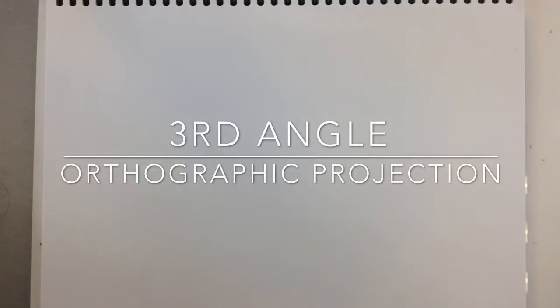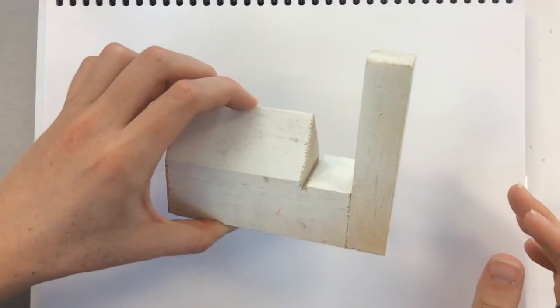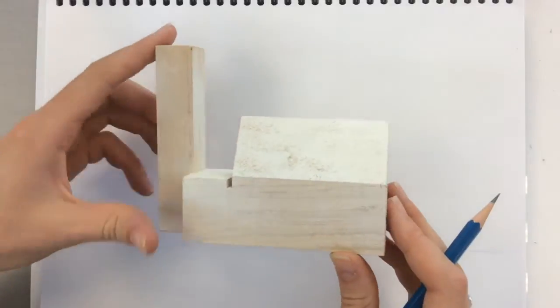Kia ora! This is a quick video showing you how to draw an orthographic projection of this little house. It's not really a house, but it is similar to the cartoon-like houses that you drew when you were little.